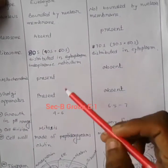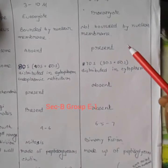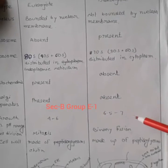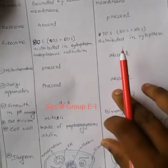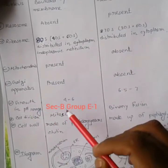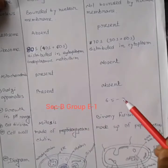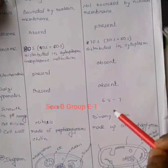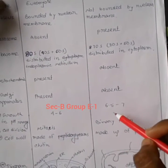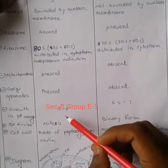The Golgi apparatus is present in the fungal cell, but in bacteria there is no Golgi apparatus present. The growth of fungi occurs at a pH of 4 to 6, and bacteria grow at a pH of 6.5 to 7.